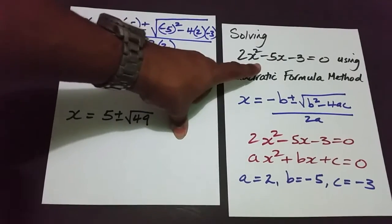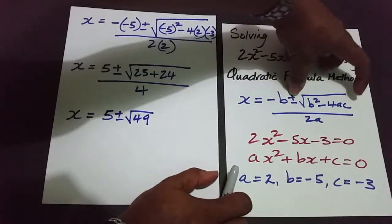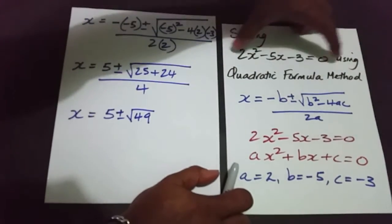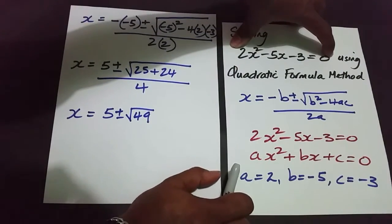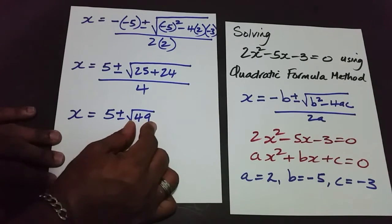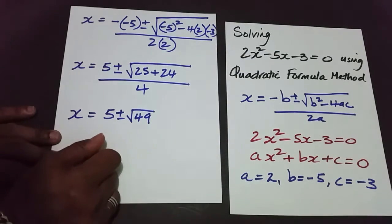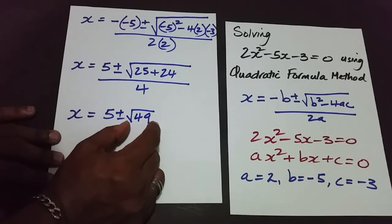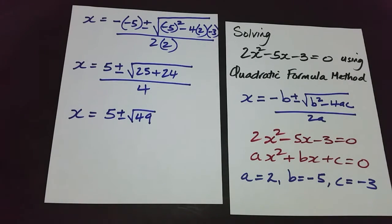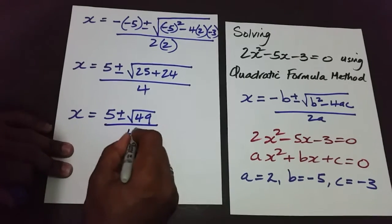This part — the discriminant — will tell you whether the quadratic equation could have been solved using factorization. If you get a number under the square root that gives a nice whole number, it could have been solved by factorization. But if square-rooting gives decimals, you could not use factorization. So let's proceed.